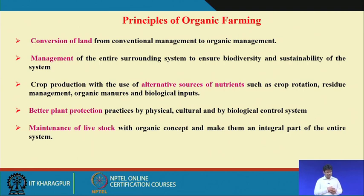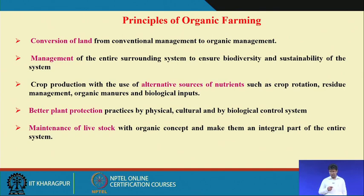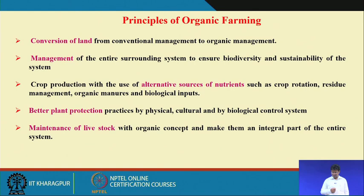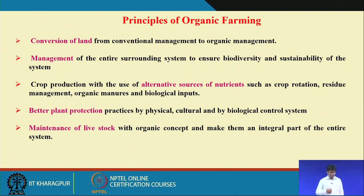Practical principles include: conversion of land from conventional to organic management; management of the entire surrounding system to ensure biodiversity and sustainability; crop production using alternative nutrient sources such as crop rotations, residue management, organic manures and biological inputs; better plant protection through physical, cultural and biological control systems; and maintenance of livestock with organic concepts, making them an integral part of the system, as they provide major inputs for nutrients and crop protection.